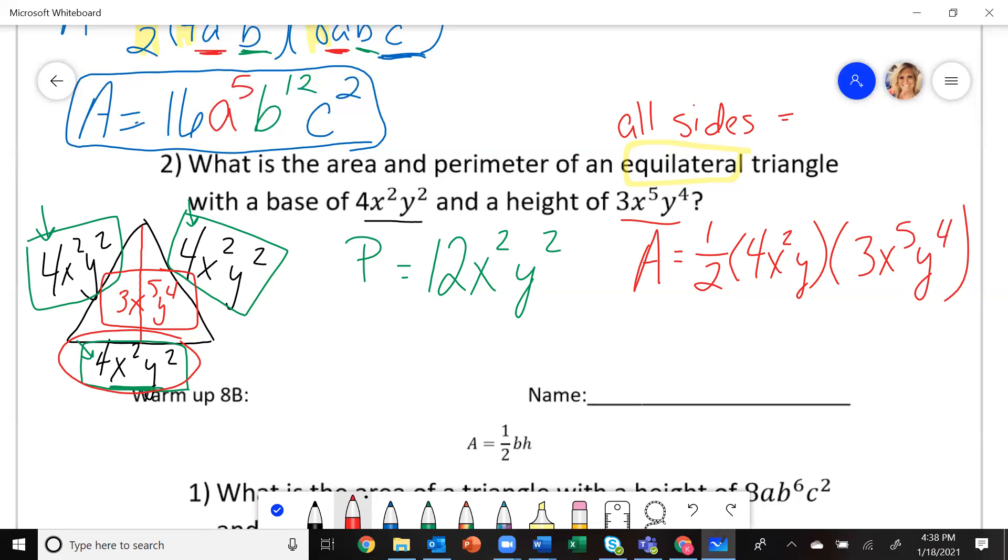So now can we do this? Take 1 half times 4 times 3. Well, 1 half times 4 is 2. 2 times 3 is 6.